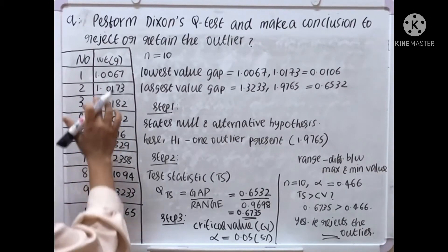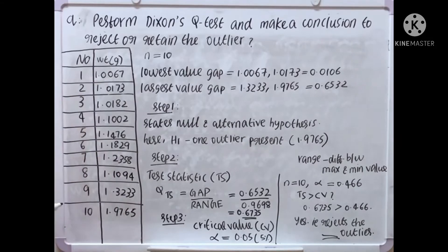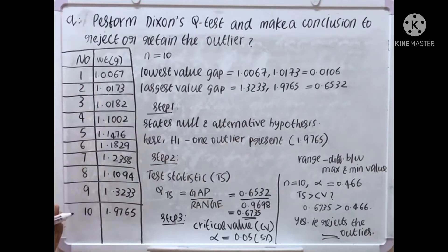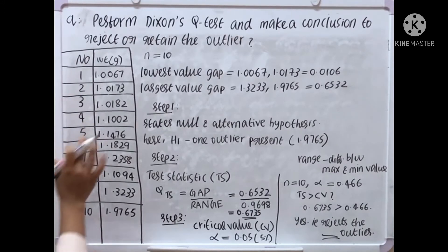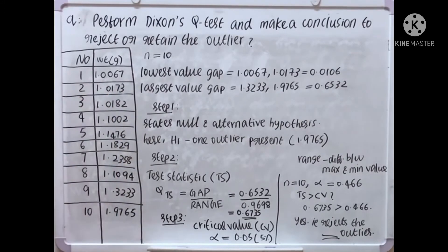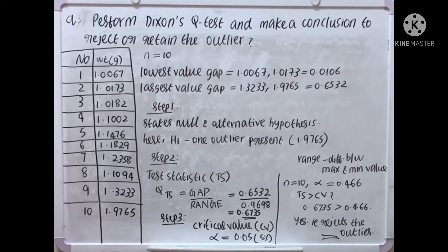And the next lowest value is 1.0173. We have to calculate the gap between these two lowest values. That is 1.0173 minus 1.0067, which is equal to 0.0106. Next, we have to calculate the largest value gap.